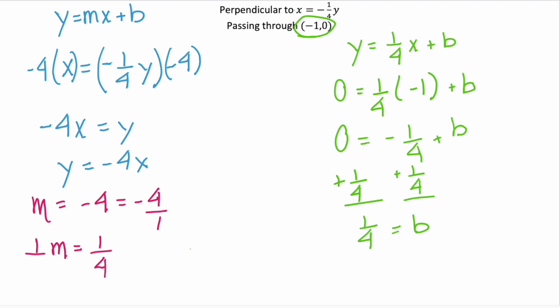Which means our perpendicular line is y equals one-fourth x plus b, which is one-fourth. So this line, y equals one-fourth x plus one-fourth, is perpendicular to that given line, x equals negative one-fourth y.